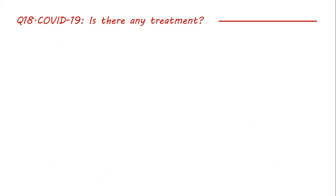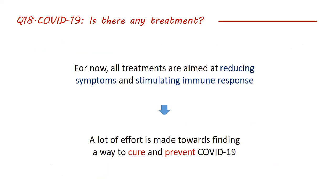Is there any treatment? For now, all treatments are aimed at reducing symptoms and stimulating the immune response. One treatment becoming slightly more famous is dexamethasone, which normally reduces the inflammatory response — it reduces the part of the immune response that produces bad symptoms and extends the survival time so the immune system can clear the virus. The virus is resolved by itself, but all treatments basically aim at reducing symptoms and stimulating this response so that it is faster.